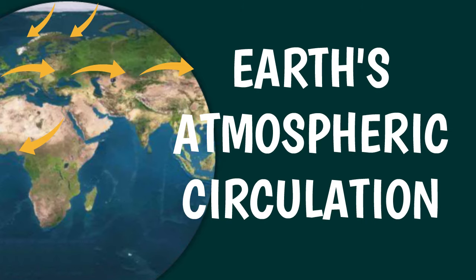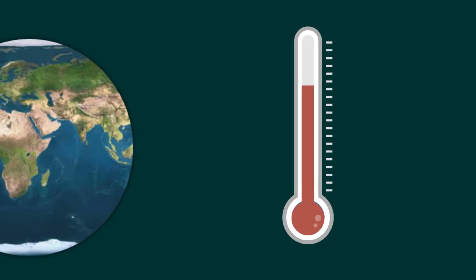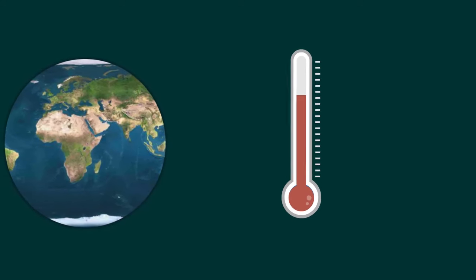In this video we will describe this global circulation and see how and why air masses move around the planet. Since temperature plays a very important role in the formation of winds, let's start by considering the variations in temperature on a global scale.